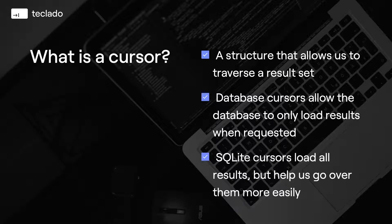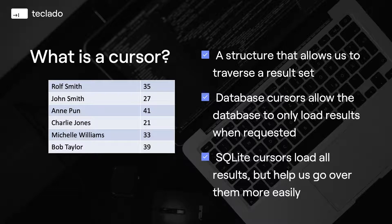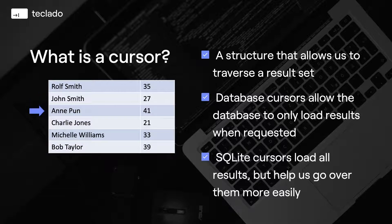SQLite cursors are a different thing. In SQLite cursors we load all the results, but they are there to help us go over them a bit more easily. So this is essentially what a cursor looks like. This is a table that we've loaded using SQLite, and the cursor is the little arrow. We can use the cursor to go through the results one by one or ten by ten, however we want.